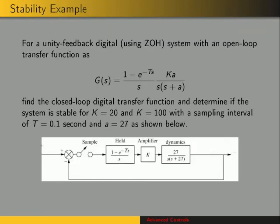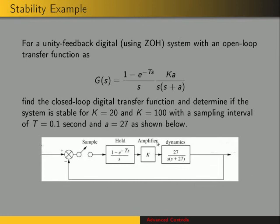Now we're going to look at this example. We have a unity feedback system with a zero-order hold and a plant transfer function 27 over s times s plus 27. We want to find out if the system is stable for two different values of k, assuming the sampling period is a tenth of a second. We need to find the transfer function of this feedback system, analyze its poles — the roots of the denominator — and how k affects them.